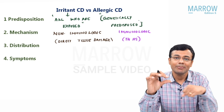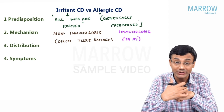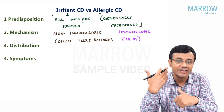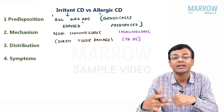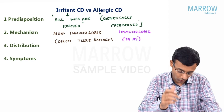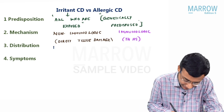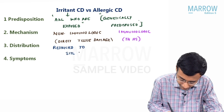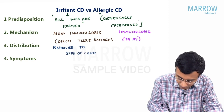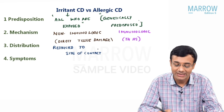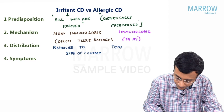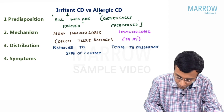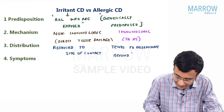Now let's look at the distribution. When acid is poured on the hand, it is going to burn only the area where it has come into contact. So irritant contact dermatitis is restricted to the site of contact. Whereas in allergic contact dermatitis, the allergy tends to disseminate beyond the site of the allergen — beyond the site of contact.